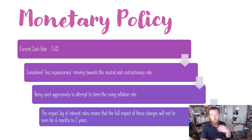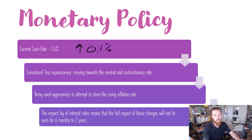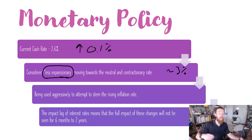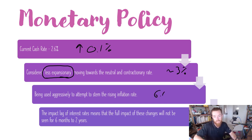Getting into monetary policy — our current cash rate is 2.6%. This has increased from 0.1% earlier in the year, with multiple cash rate increases since April 2022. This is considered less expansionary as we're moving towards the neutral and contractionary cash rate. Around 3% is seen as the current neutral cash rate, and usually above 3.5% is seen as contractionary. So the monetary policy stance should be described as less expansionary in nature. This is currently being used aggressively by the RBA to attempt to stem the rising inflation rate of 6.1%, which is trending upwards, back towards the target range of 2-3% on average over time.